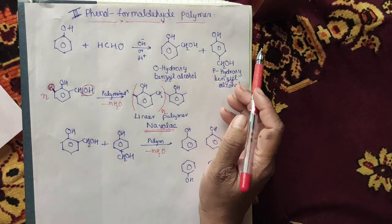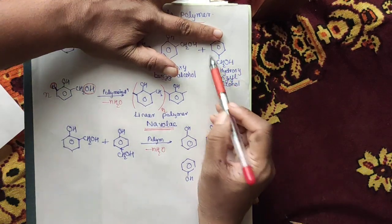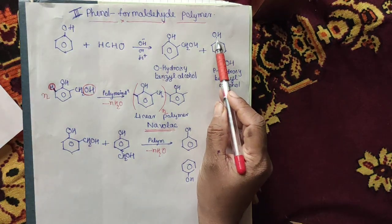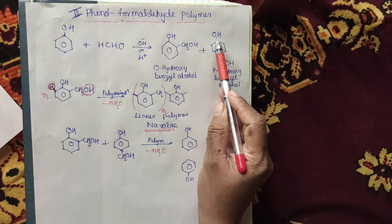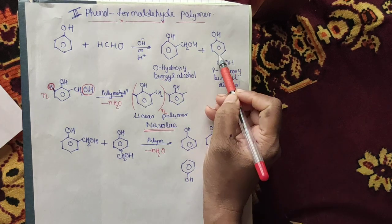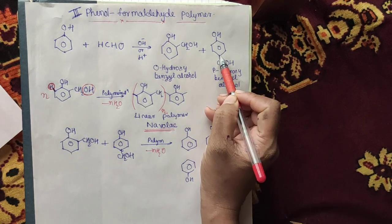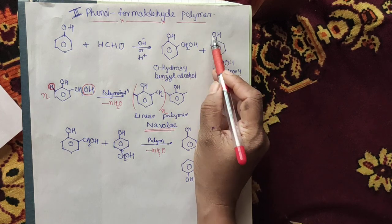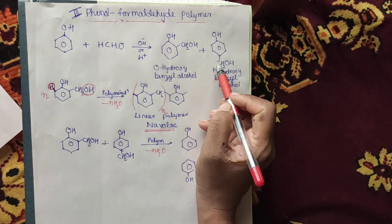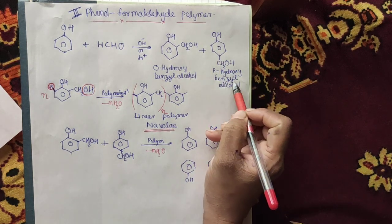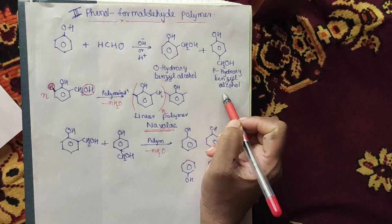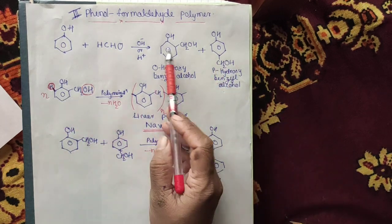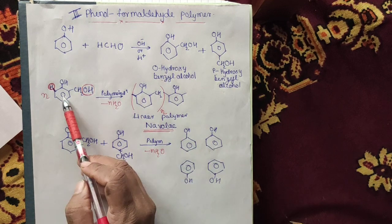One more product is formed as well — these two are isomers of each other. In this second isomer, the OH group is on the para position, which is the carbon opposite to the main group on the benzene ring. Therefore, this compound is called para-hydroxy benzyl alcohol.